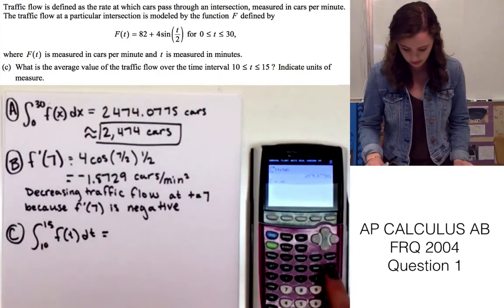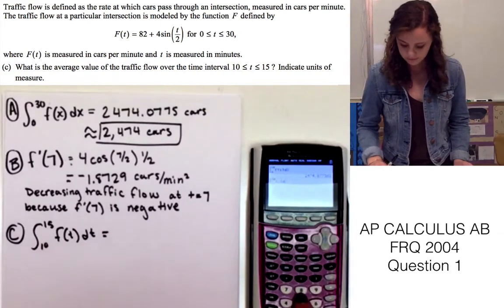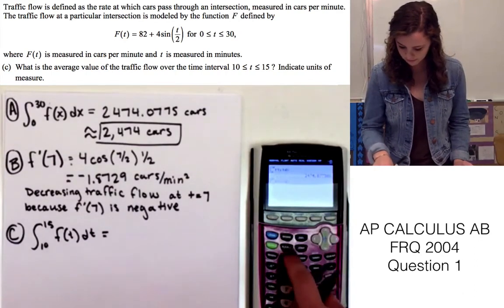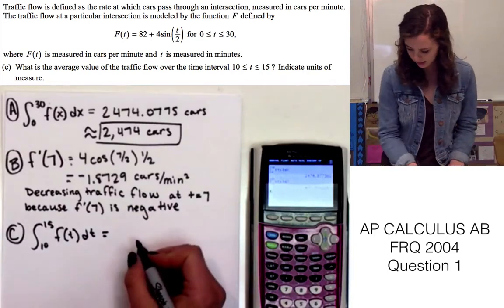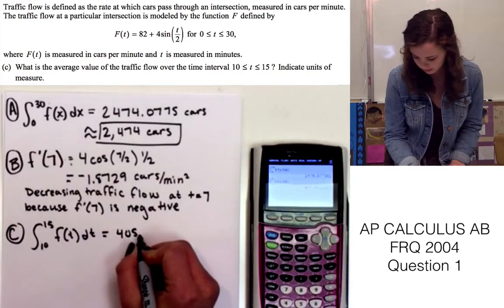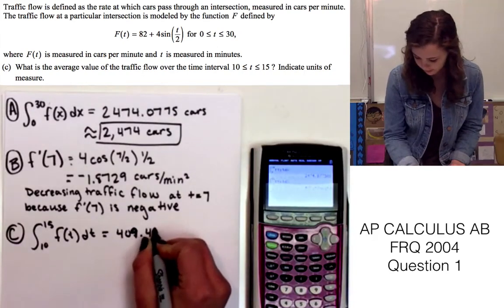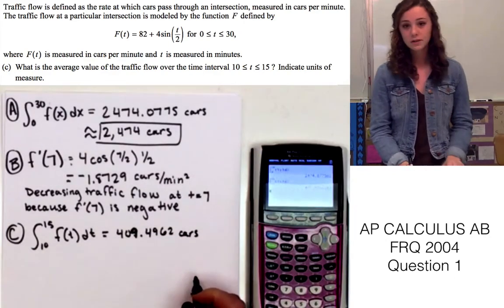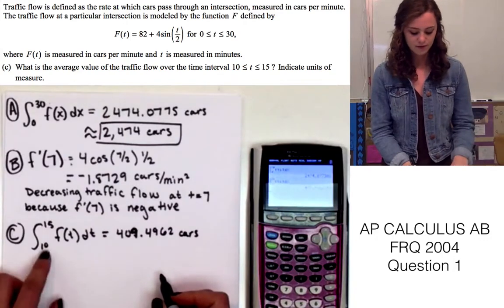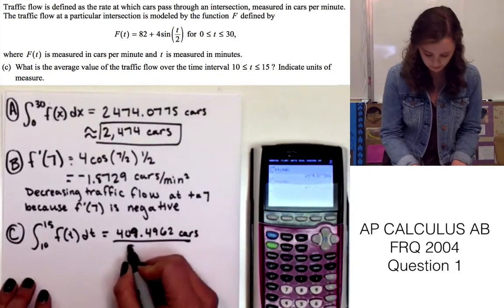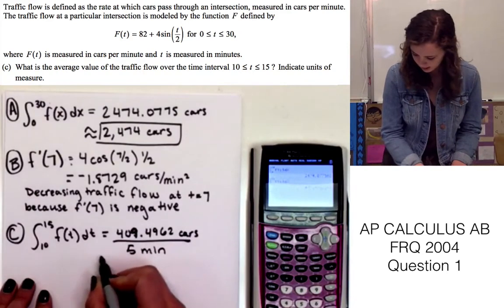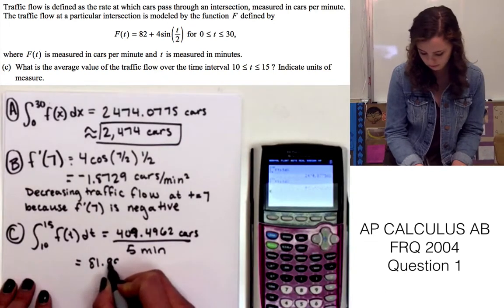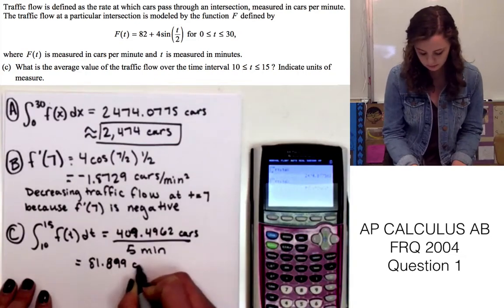So we'll put 10 as a lower limit and 15 as an upper limit, and y1, and that gives us 409.4962 cars. And since it's asking for the average, we need to divide it by 5 since there's 5 minutes from 10 to 15, so divide by 5 minutes, and that gives us an average car flow of 81.899 cars per minute.